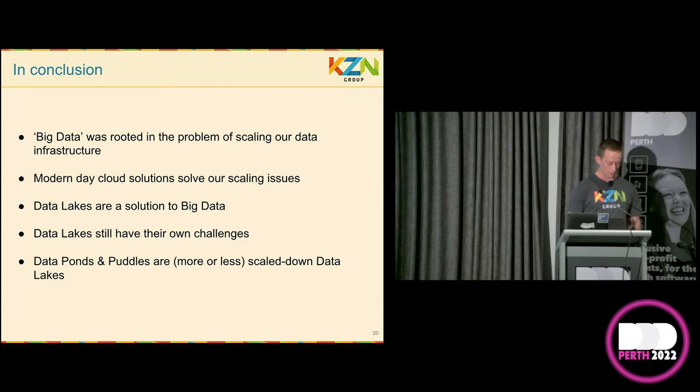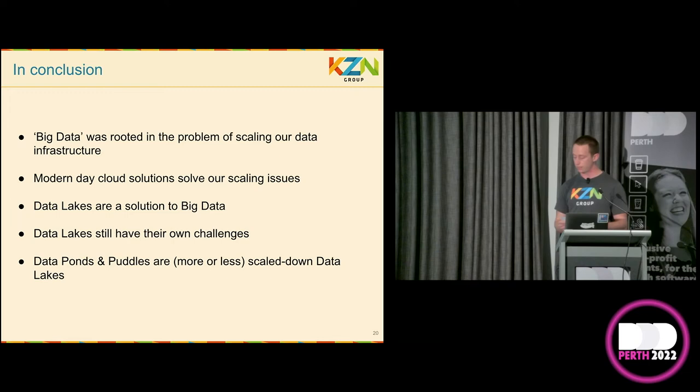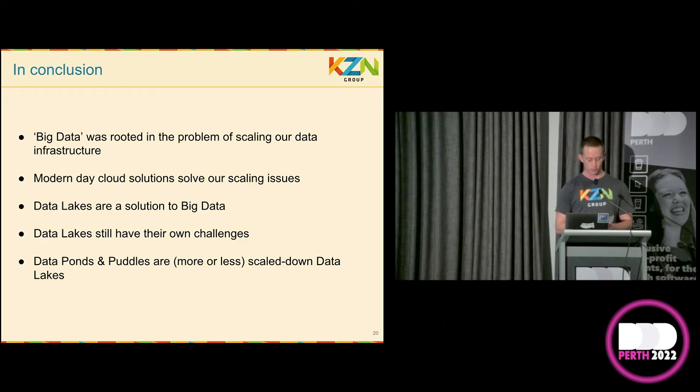So in summary, who killed big data? It was the data lake in the cloud with the scalability. In a more general sense, cloud technology has provided everyday businesses with the ability to scale their data infrastructure much more easily than before, and as a result, the traditional methods that couldn't handle big data have become a thing of the past. We've learned that data lakes are just big fancy ways of storing any kind of data that you want, and data ponds and data puddles are scaled-down, less collaborative versions of data lakes.